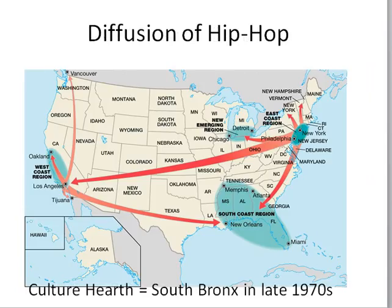We did not watch the second part of Boundaries and Borderlands. Diffusion of hip-hop is a great example of hierarchical diffusion. It started in the Bronx — that's the cultural hearth where the idea began — then leapfrogged to the West Coast, then simultaneously to the Gulf area, and spread out from there.